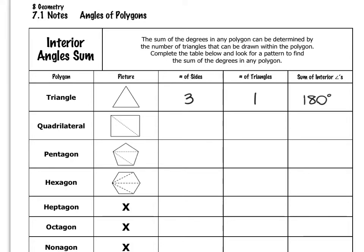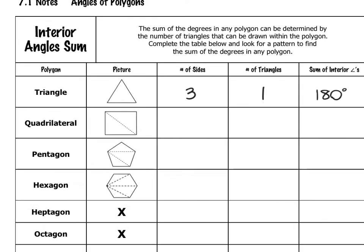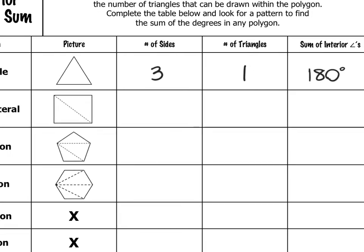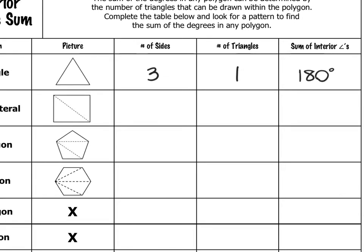Next, let's talk about quadrilaterals. Here I have a rectangle drawn, but this applies to any quadrilateral — parallelograms, squares, etc. The number of sides of a quadrilateral is four, and the number of triangles you can draw inside a quadrilateral is two. Since a triangle has a sum of 180 degrees for its interior angles, if there are two triangles, the sum of the interior angles would be 360 degrees.